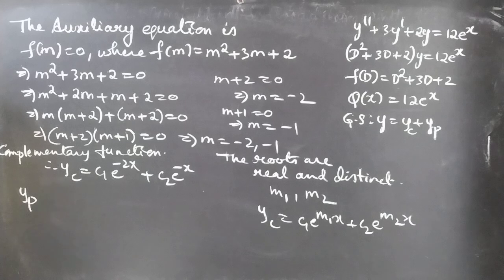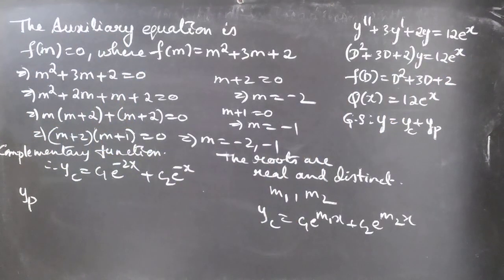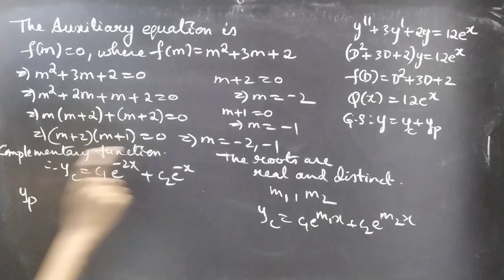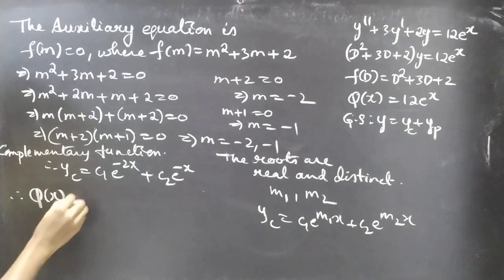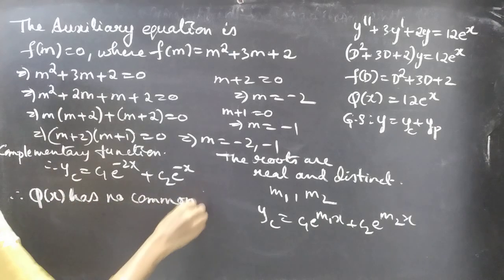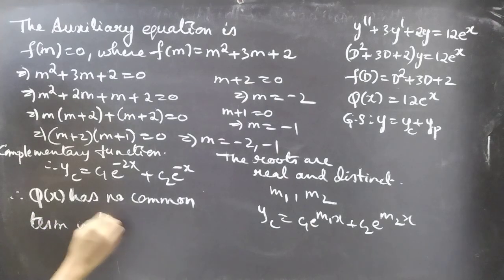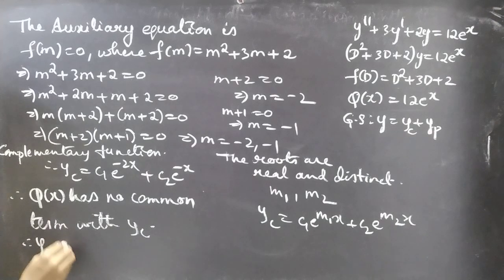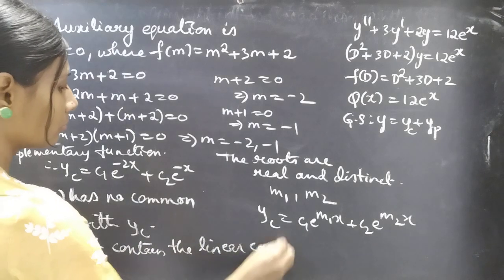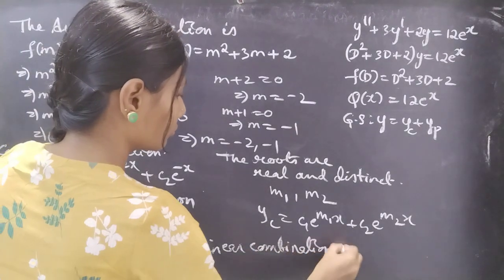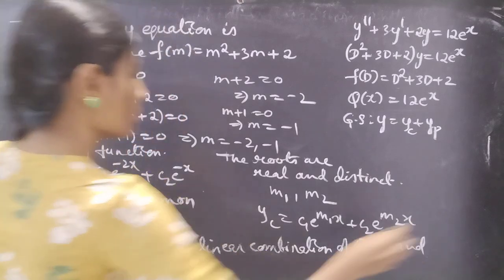Now we'll find yp. Observe Q(x) and the terms of yc. Q(x) has 12e^x, while yc has e^(−2x) and e^(−x), so Q(x) has no common term with yc. Therefore, since Q(x) has no common term with yc, yp must contain the linear combination of Q(x) and all its linearly independent derivatives.